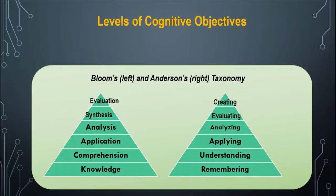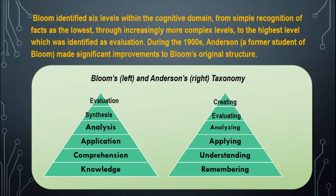There are levels of cognitive objectives in Bloom's and Anderson's taxonomy. On the left side is Bloom's, while on the right side is Anderson's taxonomy. From knowledge to evaluation in Bloom's, and from remembering to creating in Anderson's. Bloom's identifies six levels within the cognitive domain — from simple recognition of facts as the lowest, through increasingly more complex levels, to the highest level identified as evaluation. During the 1990s, Anderson, a former student of Bloom, made significant improvements to Bloom's original structure: remembering, understanding, applying, analyzing, evaluating, and creating.